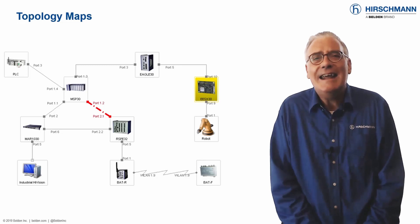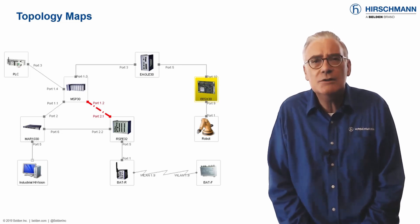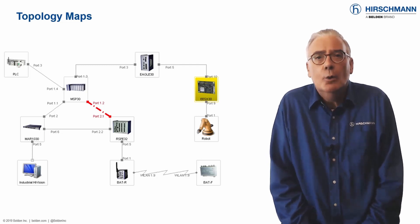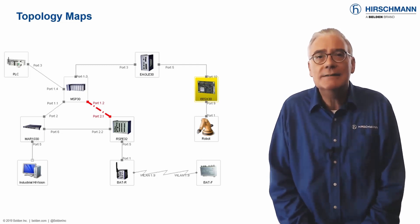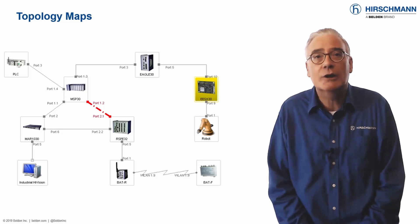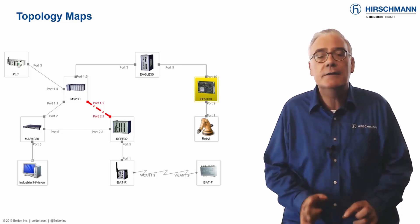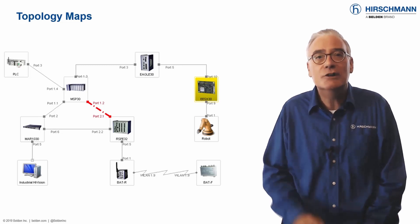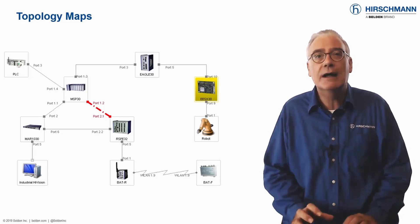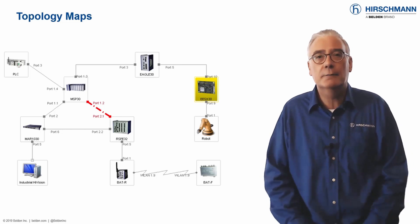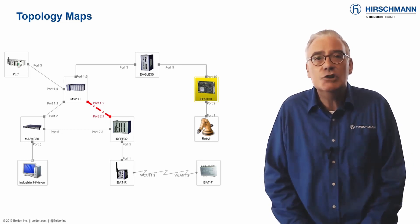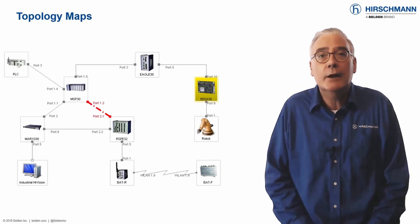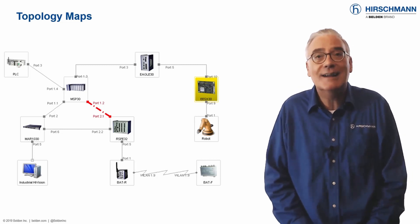A clear network topology map is one of the most important network management tools you can have. Within the map, each device is shown with a real picture, so you know exactly what kind of device you are looking at. Double-clicking allows you to drill down into a device for more granular information. Connections show the port numbers at each end of the link, so you always know where the cables are connected.